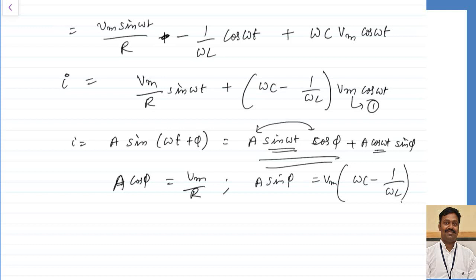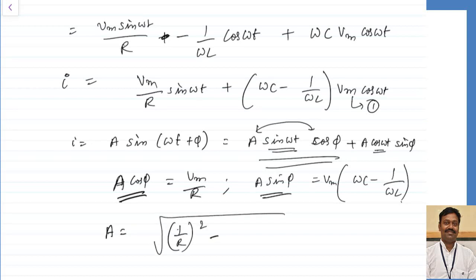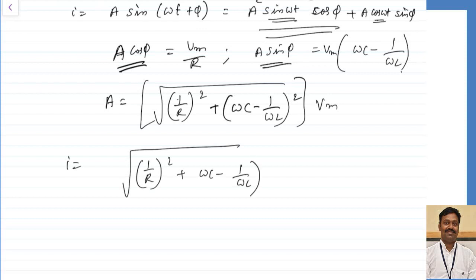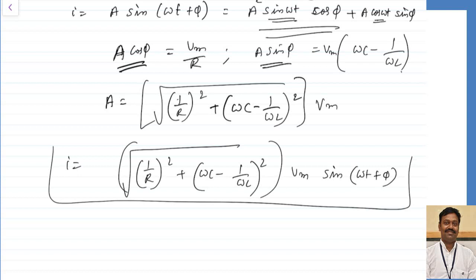I can calculate the value of A by squaring and adding both equations. Since cos square phi plus sin square phi equals 1, A squared gives A equal to the square root of 1 by R square plus omega C minus 1 by omega L whole square, multiplied by V maximum. So the total current I is equal to this A times V maximum sin of omega t plus phi.